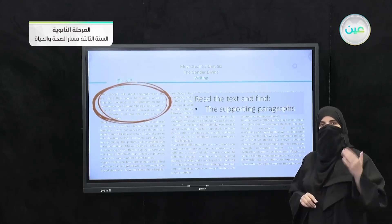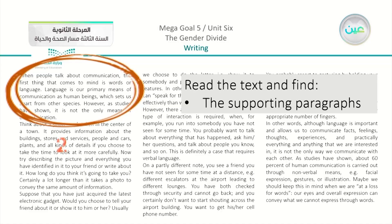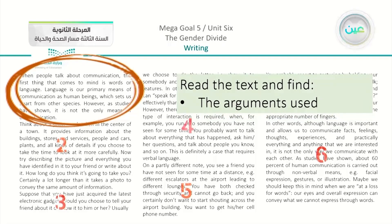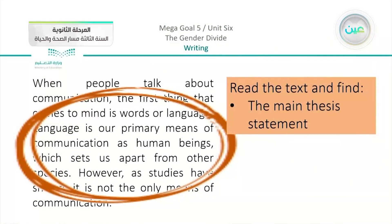When you take a look in your book, you can find paragraphs two through six. So we have the introduction and five paragraphs to support the idea. After that, we have to read the text and find the arguments used. We are going to see what types of arguments are present in the passage.